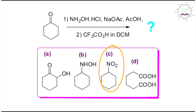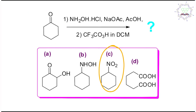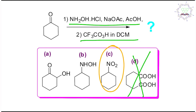Now, if this question appears in your exam, how can you get the right answer in less than 30 seconds? First, the starting material is a simple ketone, and the first step is a Schiff base or oxime formation. In the second step it is a peroxy acid — is it possible to break a carbon–carbon bond? No, obviously not possible, so those options are eliminated.